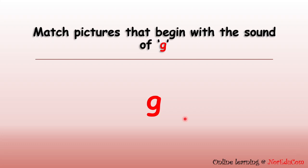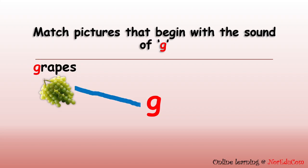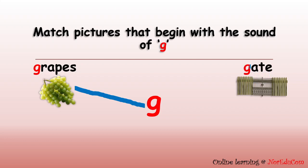Now let's match pictures that begin with the sound of G. Can you name this fruit? Yes, these are grapes. G, g, grapes. It starts with the sound of G, letter G. So let's match to letter G. Can you name the next picture? Yes, this is a gate. G, g, gate. It starts with the sound of G, letter G. So let's match to letter G.